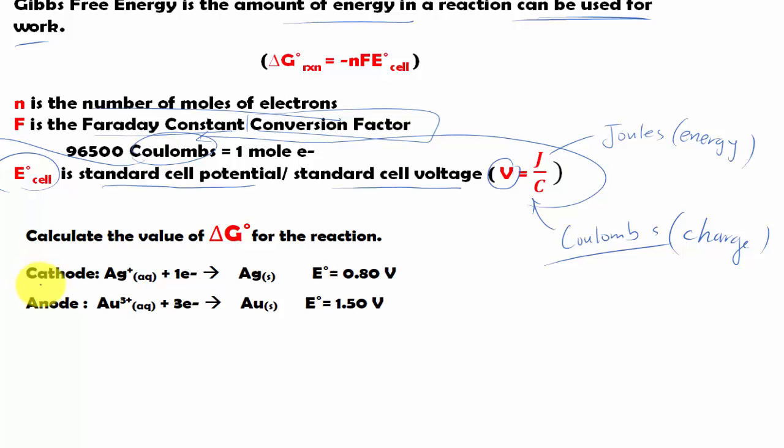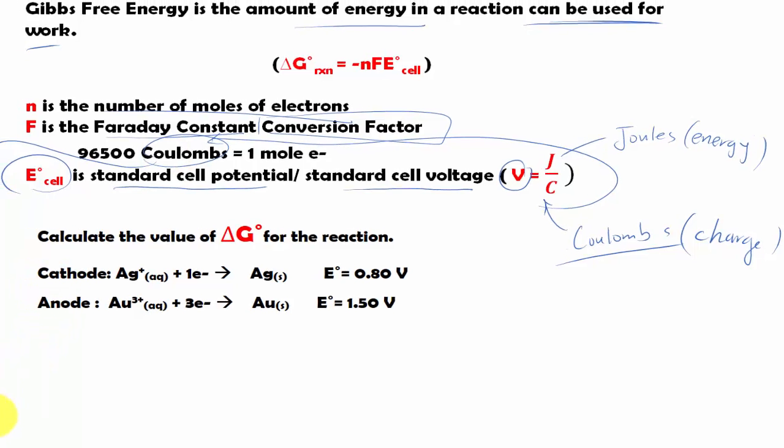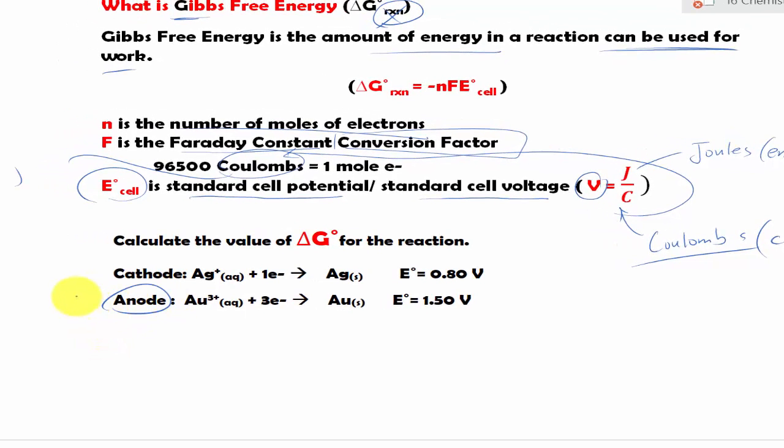First of all, our half cells is given to us in terms of cathode and anode, so we know this is oxidation. So we have to flip this around, which gives us Au = Au³⁺ + 3e⁻.